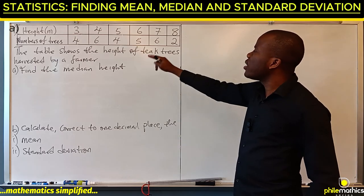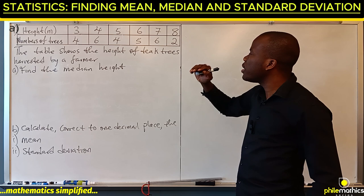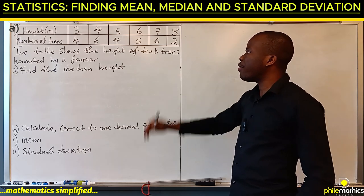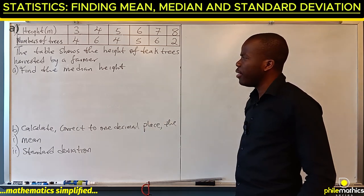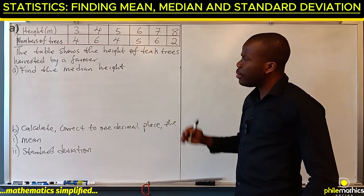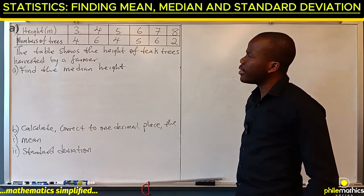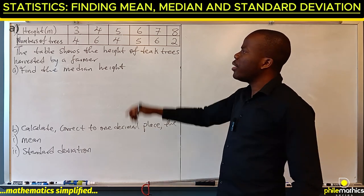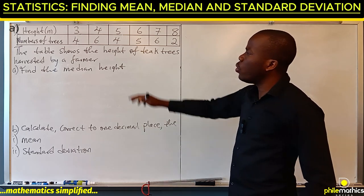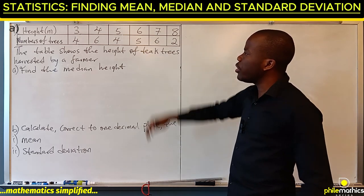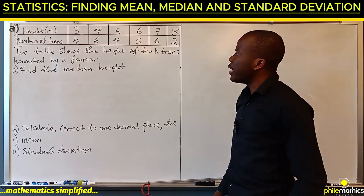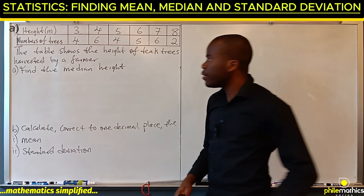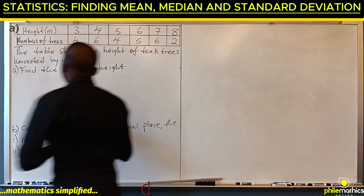The table shows the height of trees harvested by a farmer. Find the median height. To find the median height, we need to know the number of trees that the farmer harvested.